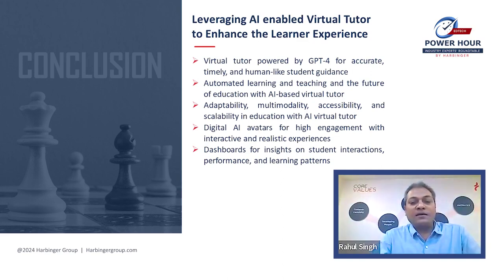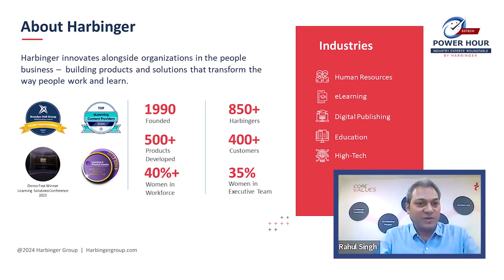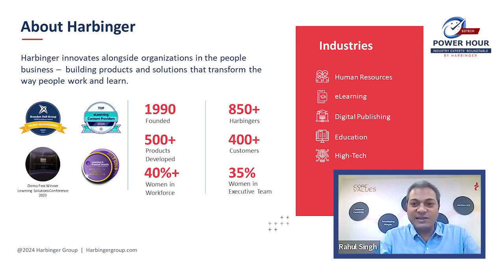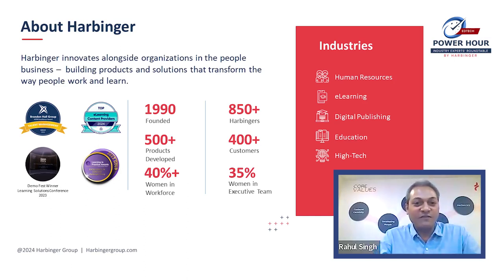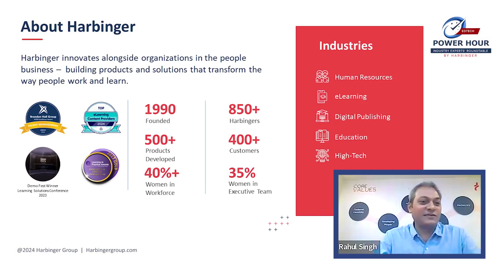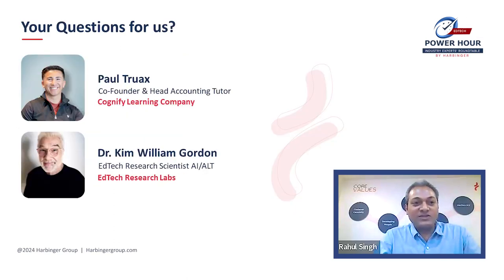Before we move to Q&A, quickly — this Power Hour was presented to you by Harbinger. Harbinger innovates alongside organizations, building products and solutions that transform the way people work and learn, with strategic focus on human resources, learning, digital publishing, education, and high tech. Founded in 1990, with over three decades of experience, 850-plus team members, 500-plus products developed, 400-plus customers served, and 43 percent of the workforce and 40 percent of the executive team represented by women.